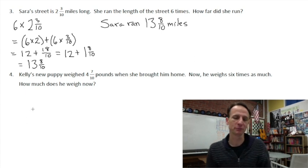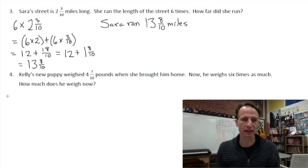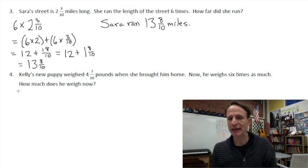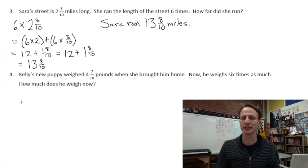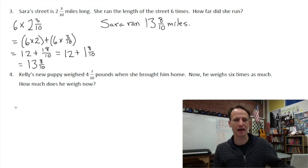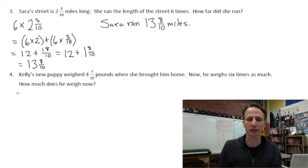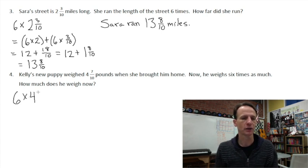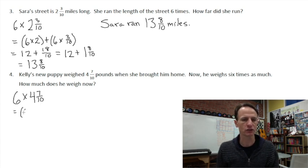Yeah, go Sara, being chased by that dog. Kelly's new puppy weighed four and seven-tenths pounds when she brought him home. Now he weighs six times as much. How much does he weigh now? Okay, so now he's six times as much. You see why we really don't need to draw anything out here. It's pretty apparent the way these are worded. So six times as much as he did when he was four and seven-tenths pounds.